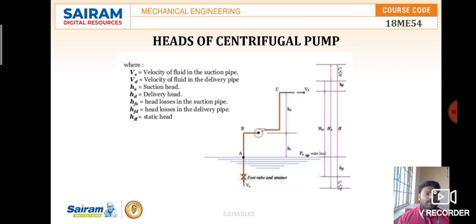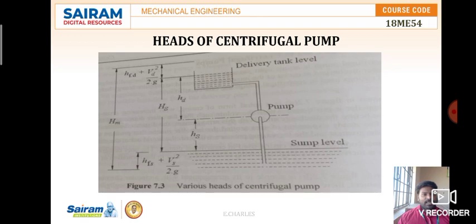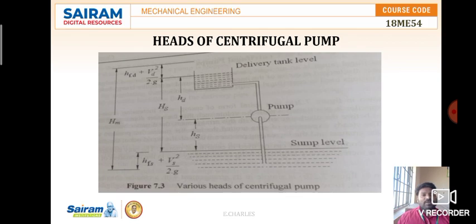Looking at the heads of a centrifugal pump: the portion from the suction level to the eye of the impeller is the suction head hs. There is a sump level where the suction pipe is immersed, and a delivery pipe fixed to an overhead tank. From the eye of the impeller to the delivery tank level is the delivery head hd. The combination hs plus hd gives the total static head.